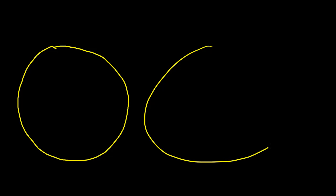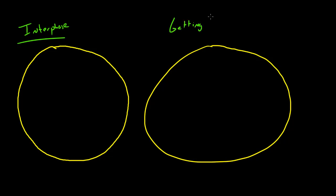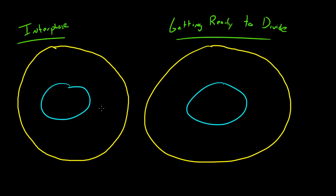So during interphase, let me go ahead and draw two cells. The first one will be interphase — we already know that interphase means when the cell is going about its daily routine, not dividing. I'll label these: interphase on the left and getting ready to divide on the right. During interphase the blue thing is the nuclear membrane, and the DNA — which is of course in the nucleus — is all spread out, a bunch of tiny strands loose and spread out all around the nucleus.